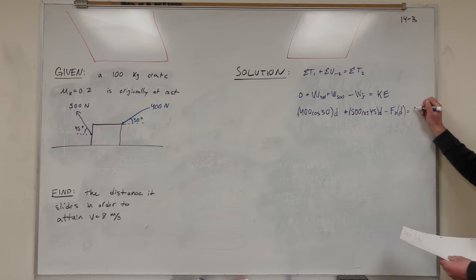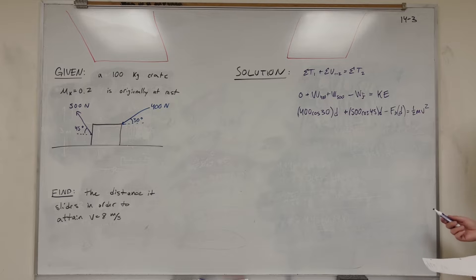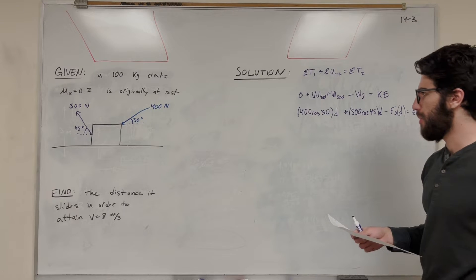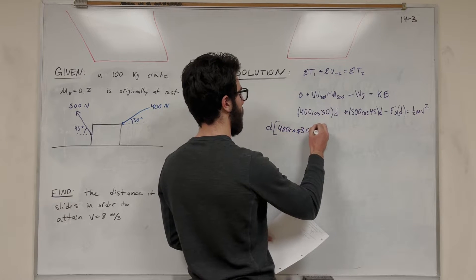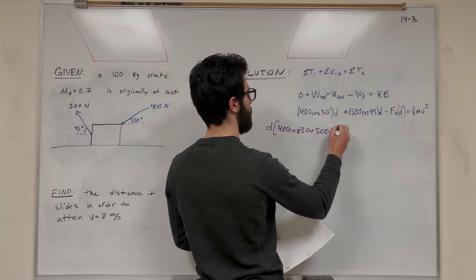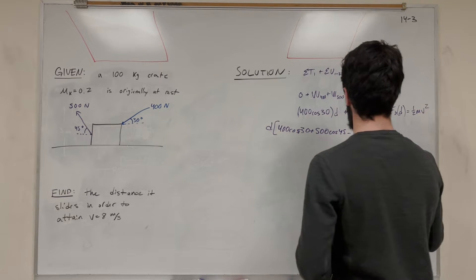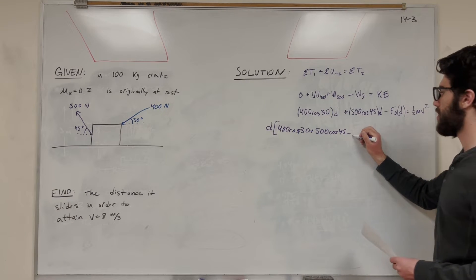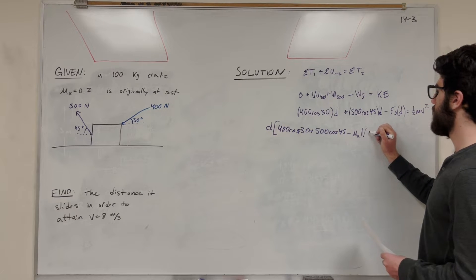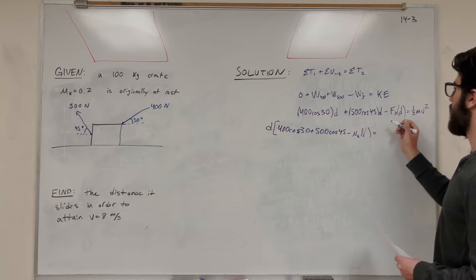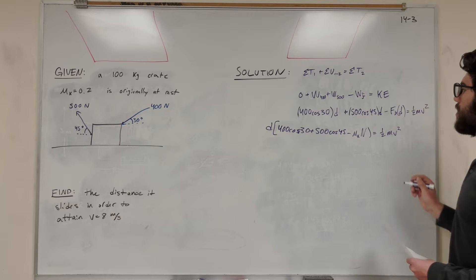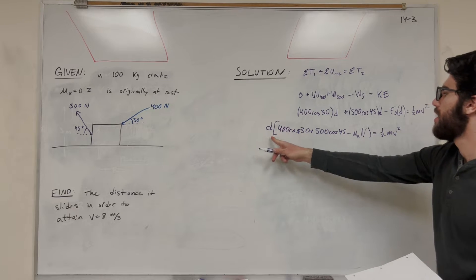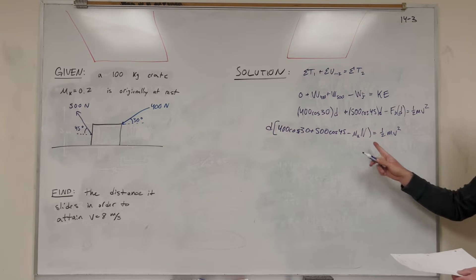That's equal to kinetic energy, so that's ½ mass times velocity squared, with velocity equal to 8 meters per second. We can factor out distance: 400 cosine of 30 plus 500 cosine of 45 minus the force of friction — which is the coefficient of kinetic friction times the normal force — all equal to ½ mass velocity squared. What we don't know: we're solving for distance, and the only other unknown is the normal force.